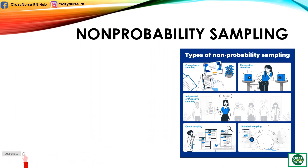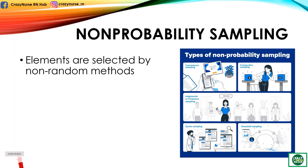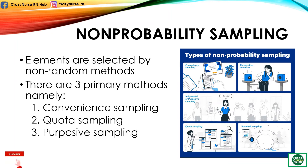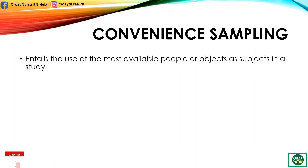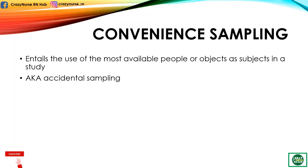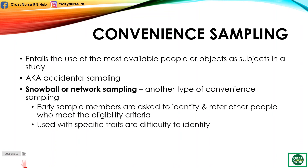Now let's have non-probability sampling. Elements are selected by non-random methods, and there are three primary methods: convenience sampling, quota sampling, and purposive sampling. Convenience sampling entails the use of the most available people or objects as subjects in a study. This is sometimes called accidental sampling. A faculty member who distributes questionnaires for her study to her own class is using convenience sampling. Another type of convenience sampling is known as snowball sampling or network sampling, where early sample members are asked to identify and refer other people who meet the eligibility criteria. This method is most likely to be used where the research population consists of people with specific traits that are difficult to identify.